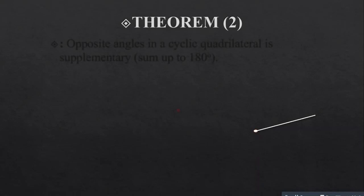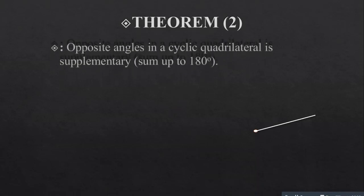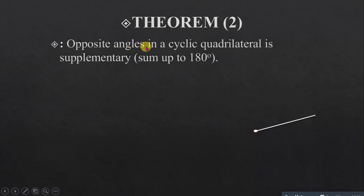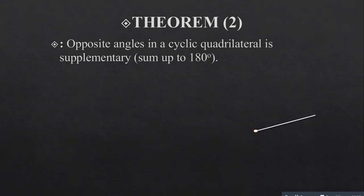Theorem 2 states that opposite angles in a cyclic quadrilateral are supplementary and sum up to 180 degrees. A cyclic quadrilateral is a four-sided plane figure formed inside a circle.